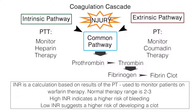The INR can be used to adjust the patient's drug dosage to get the PT into the desired range. When starting warfarin, PT and INR should be assessed daily until a stable daily dose is reached — that is the dose that maintains the PT and INR within the therapeutic ranges and does not cause bleeding. From then on, PT and INR are checked every two to four weeks as long as drug therapy is continued.